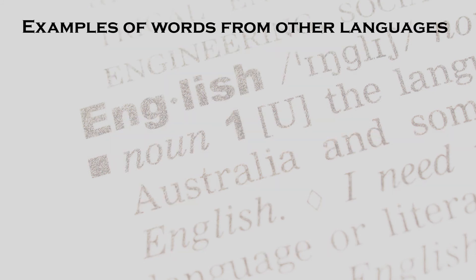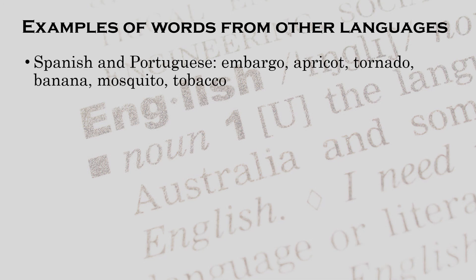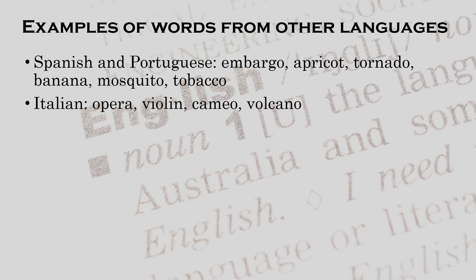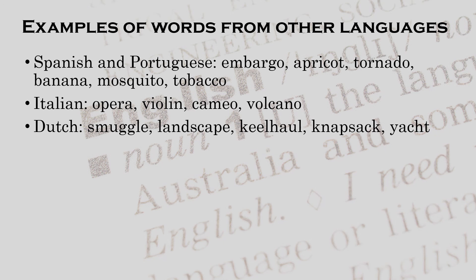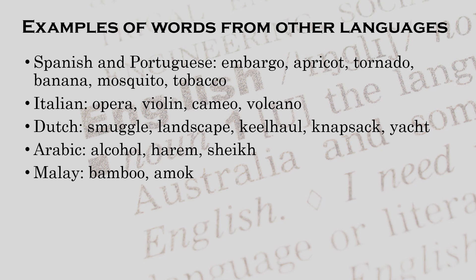We will conclude by looking at a few more examples of how English has enriched its vocabulary by borrowing words from other languages. The Renaissance and the Age of Discoveries, followed by the expansion of the empire, opened up many opportunities for the language to embrace loan words. From Spanish and Portuguese, English borrowed: embargo, apricot, tornado, banana, mosquito, tobacco. From Italian: opera, violin, cameo, volcano. From Dutch: smuggle, landscape, keel, hole, knapsack, yacht. From Arabic: alcohol, harem, sheet. From Malay: bamboo, amok.